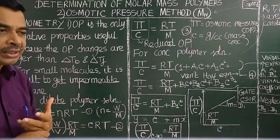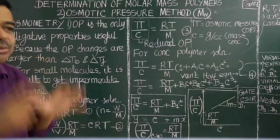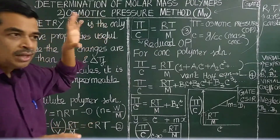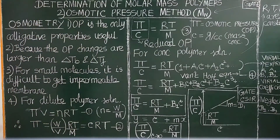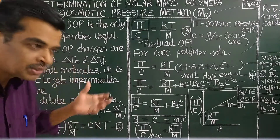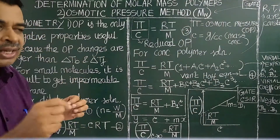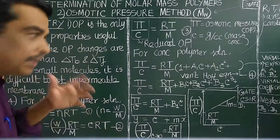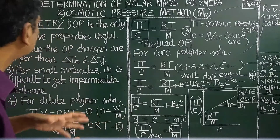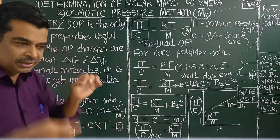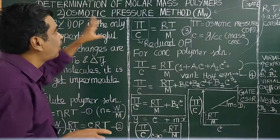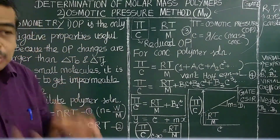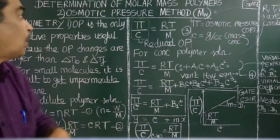What is osmotic pressure? Osmotic pressure is one of the colligative properties. We have studied earlier osmotic pressure, isotonic solution, hypertonic solution, osmosis, and reverse osmosis. Osmotic pressure is the only colligative property useful for studying macromolecules and polymers, and also useful for the determination of molar mass of polymers.